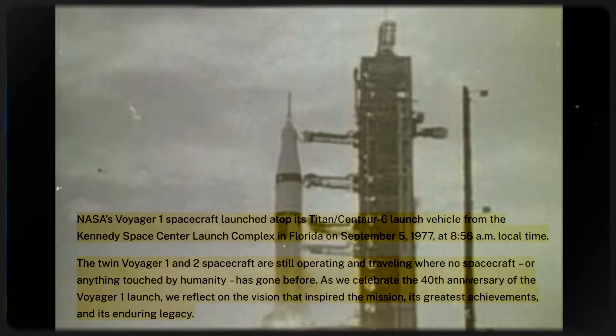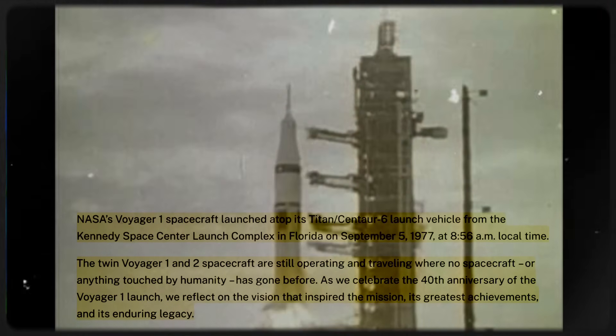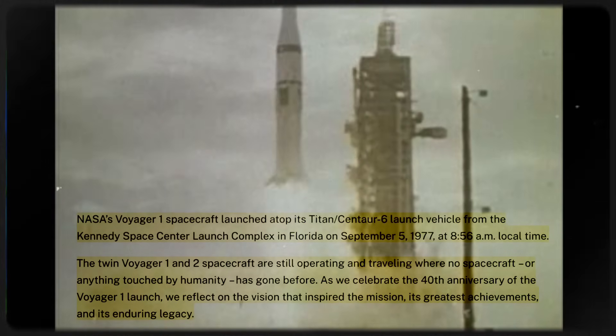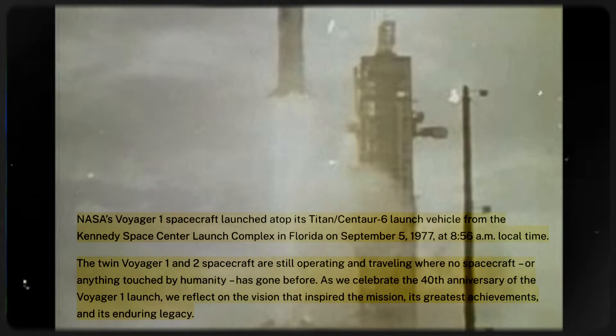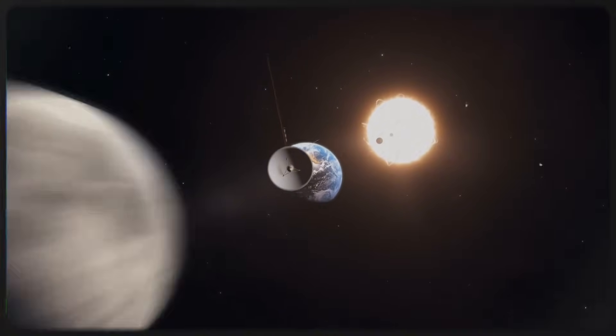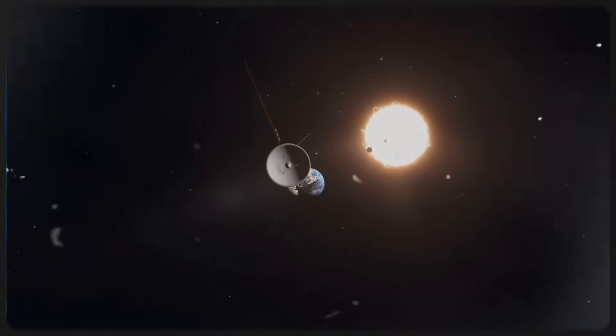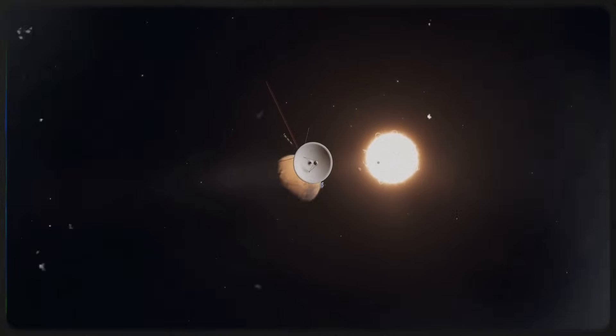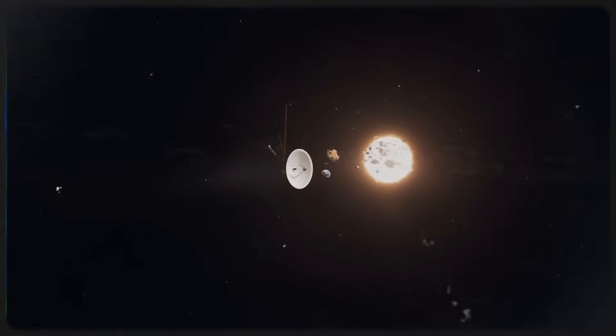Voyager 1's mission began on September 5, 1977, when it was launched with the ambitious goal of exploring the outer planets of our solar system, an endeavor that no spacecraft had ever undertaken before. Initially, its primary mission was to study Jupiter and Saturn, but it far exceeded expectations, capturing groundbreaking data and images that would change our understanding of the solar system forever.